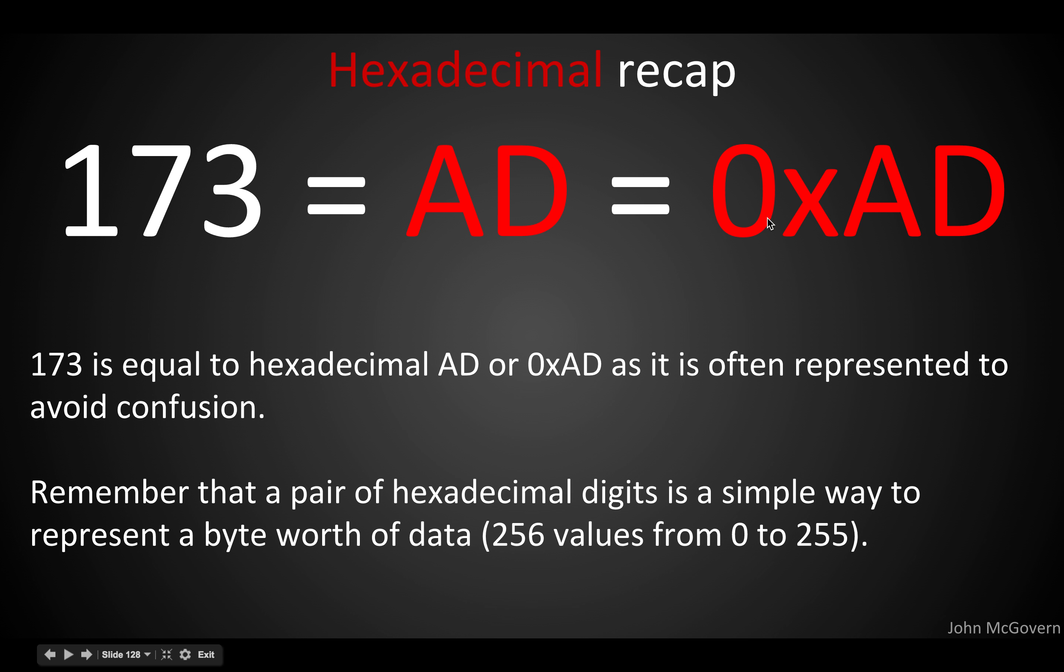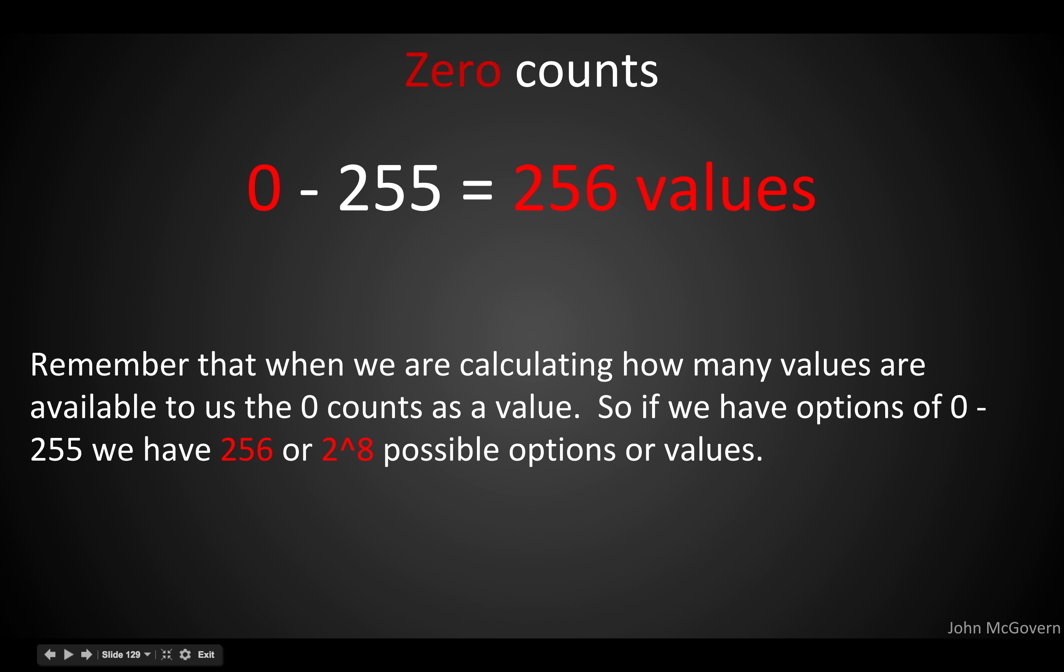But really, it's just hexadecimal values, A, D. So, very convenient shorthand to represent a byte worth of data. 256 values in just these two short places. Very nice. And the last thing to remember here. When we're thinking about values, 0 to 255 represents 256 values. So, the 0 counts as an option. Remember, in binary and decimal and hexadecimal, and in networking in general, we start counting with the 0. The 0 counts as a possible value. So, when we say we have 256 options in a byte, that means we have option 0 through option 255.